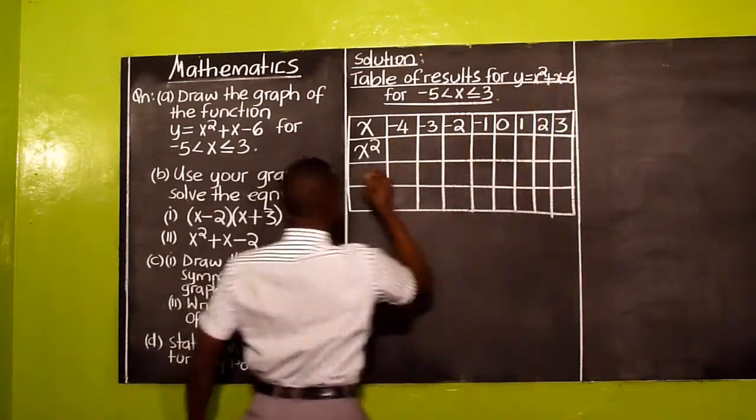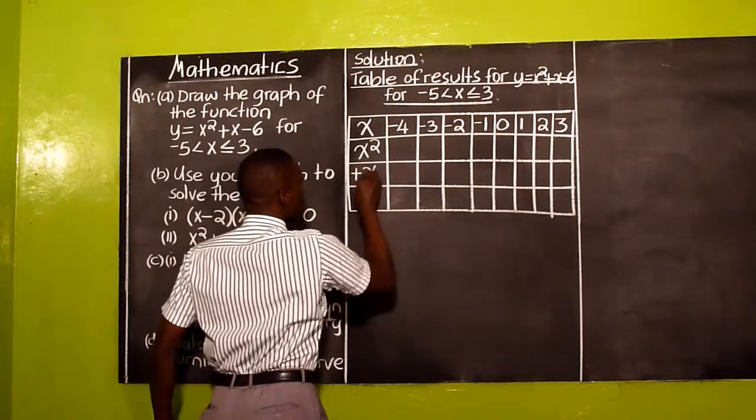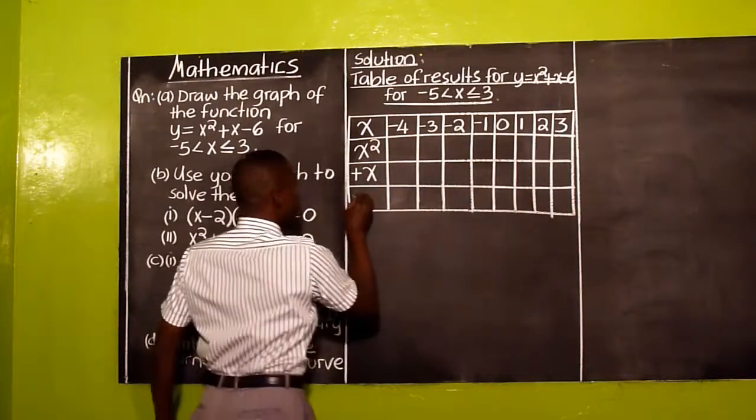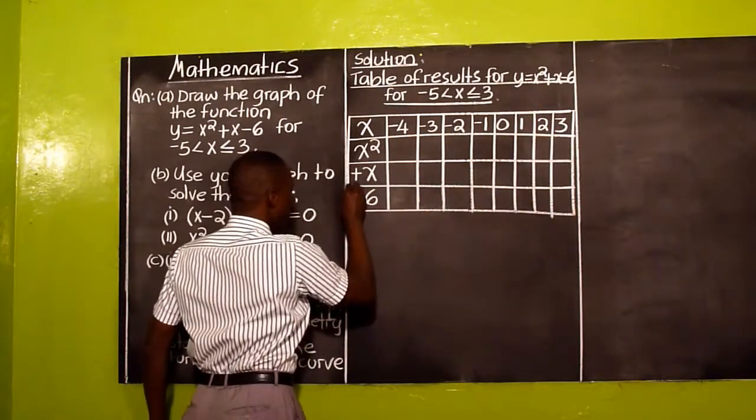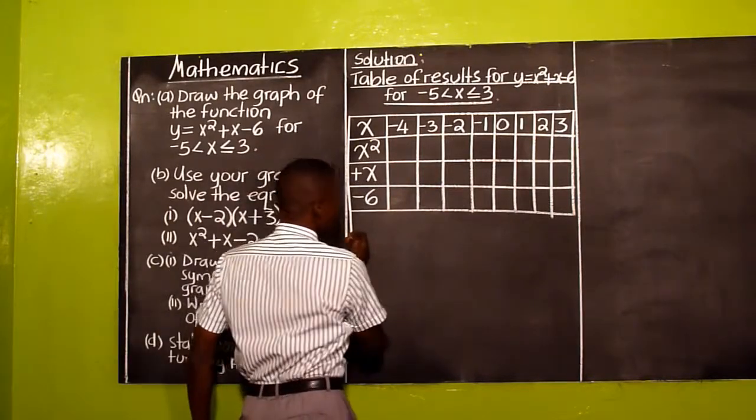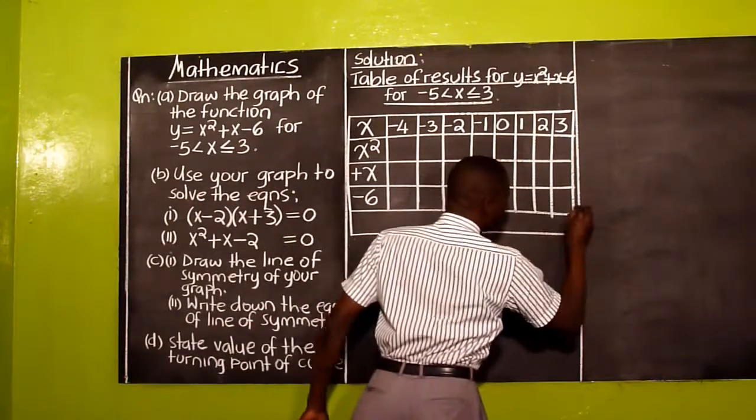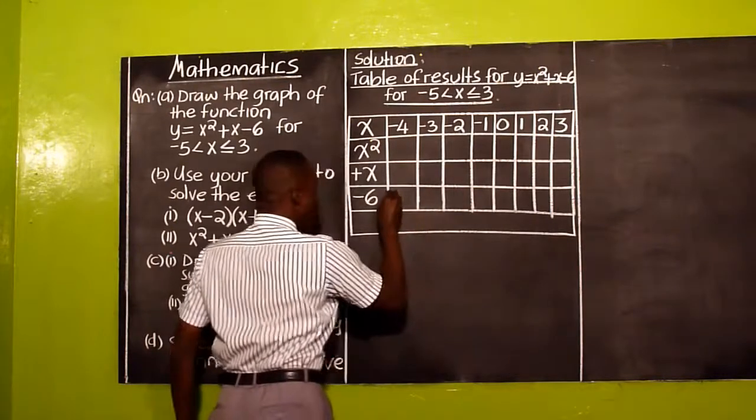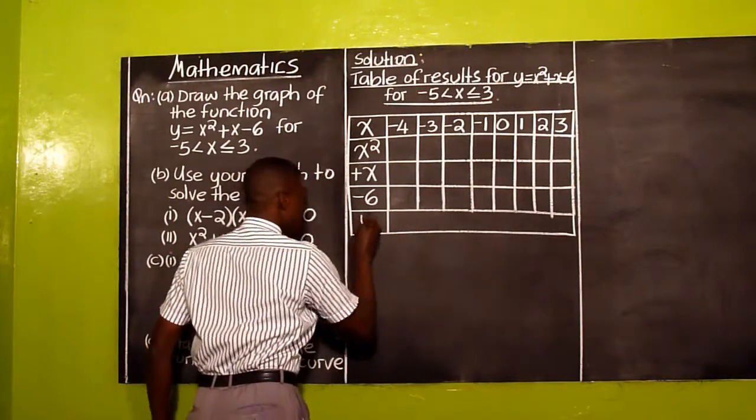The next one is a positive X. Then the last one is a -6. And then finally, they are supposed to give us the final result for the value of Y. That is Y.